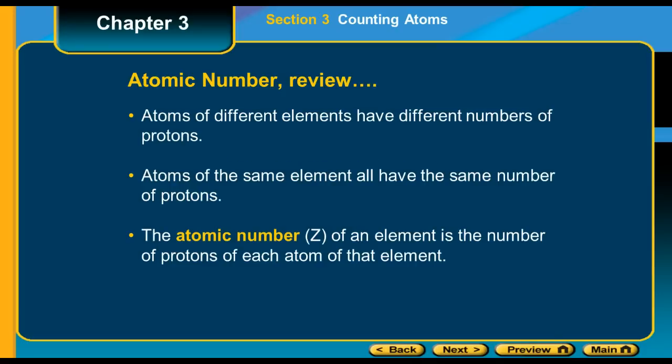Okay, so to review, the atomic number. Atoms of different elements have different numbers of protons, but we know that the number of protons define what element we're looking for. So every time you pick up copper, it's going to have the same number of protons and therefore the same atomic number. The atomic number is the number of protons in any particular element.